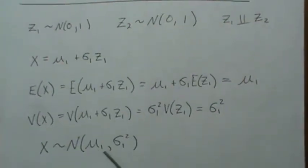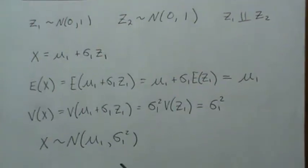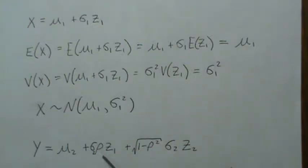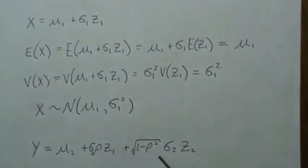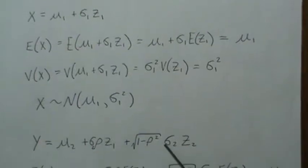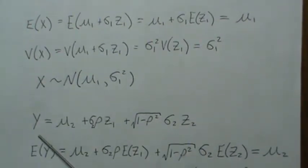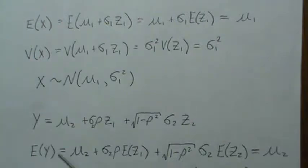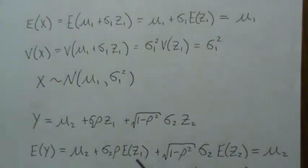So x is normal(mu1, sigma1 squared). Now let's create y in a unique fashion where it's mu2 plus sigma2 times rho — which is the correlation we want between x and y — times z1, plus sigma2 times the square root of 1 minus rho squared times z2. Looking at the expected value, we know y is normal because it's a linear combination of normal random variables. The expected values of z1 and z2 are zero, so those drop out, leaving just mu2.